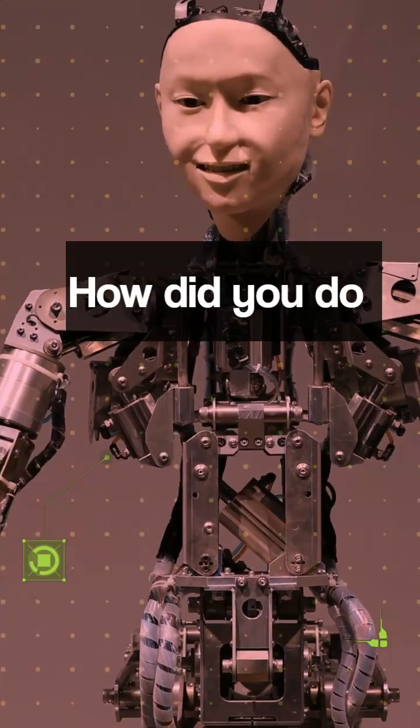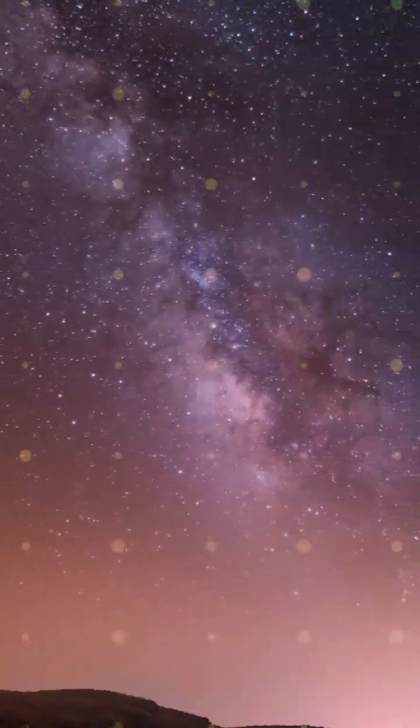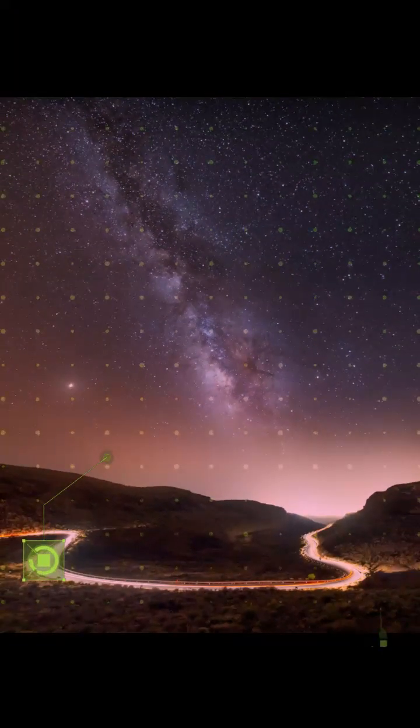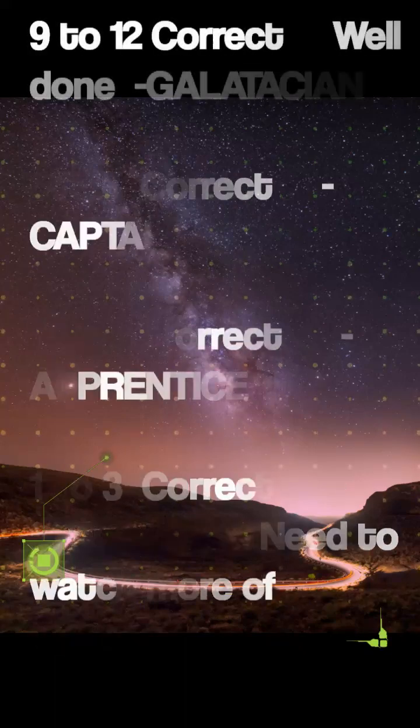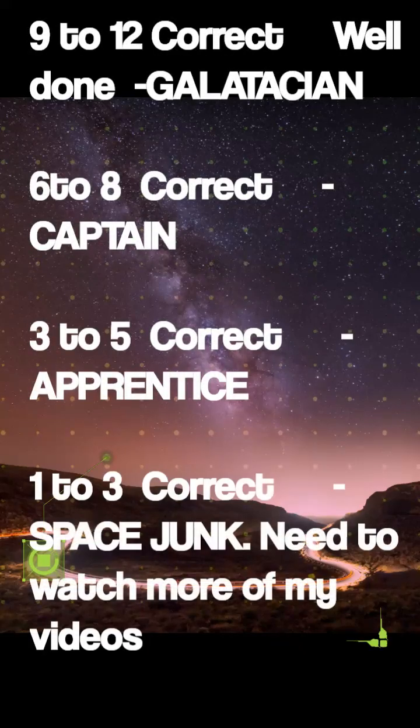How did you do? 9 to 12 correct, well done Galactarian. 6 to 8 correct, Captain. 3 to 5 correct, Apprentice. 1 to 3 correct, Space Junk. Need to watch more of my videos?